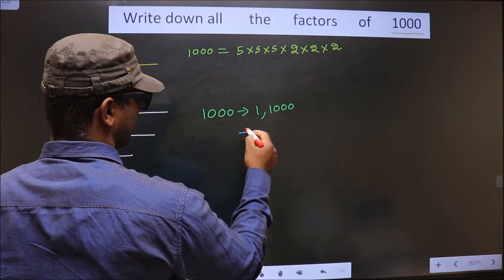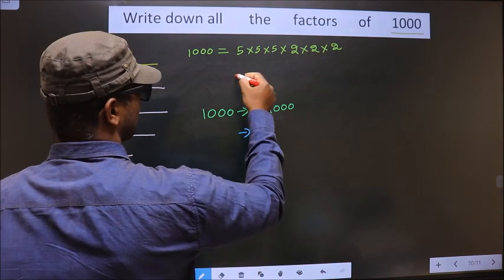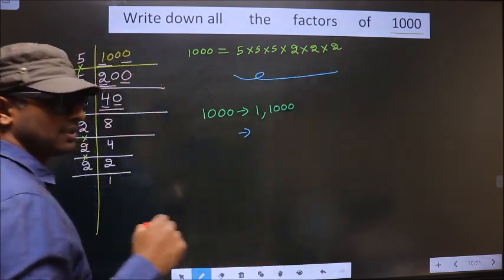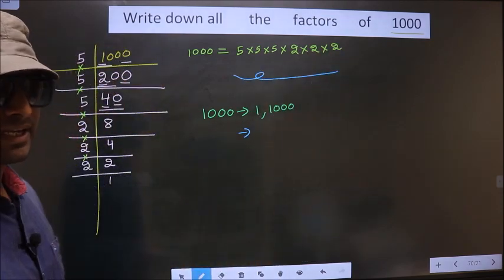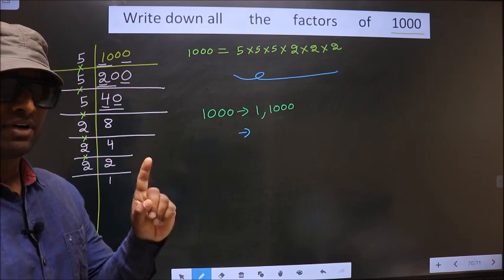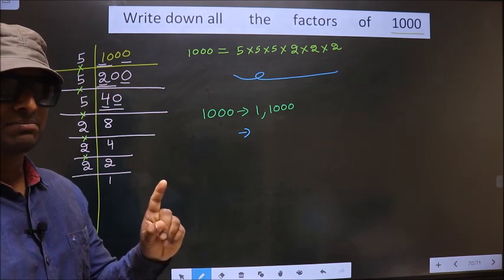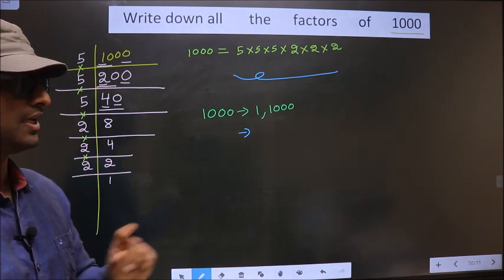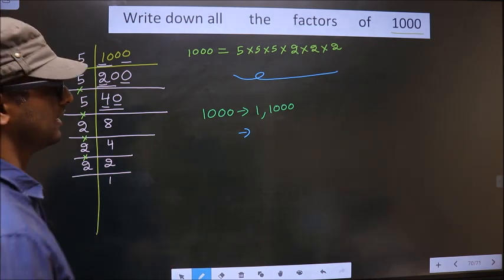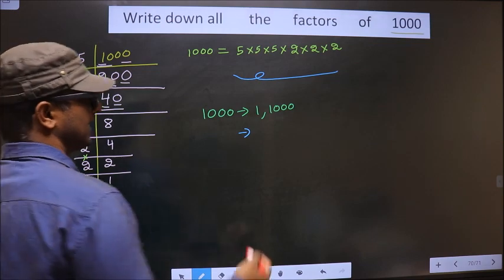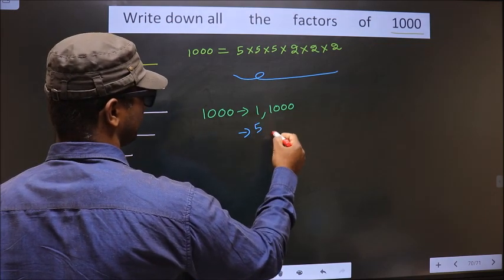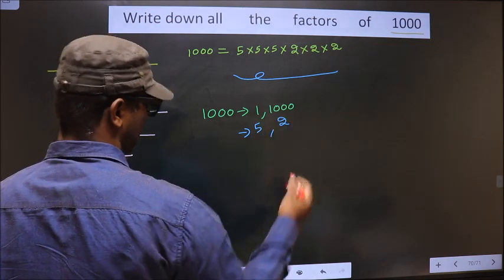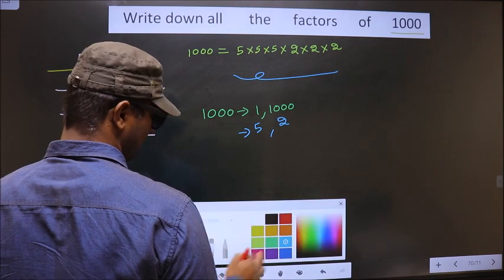Next, from all these prime factors, you take out 1 different number at a time. Like that, how many numbers do we get? We get 5 and 2. That's it.